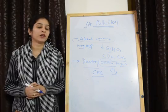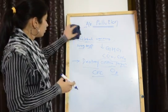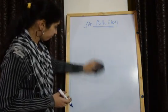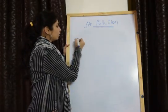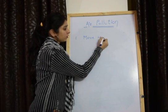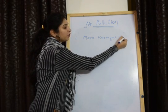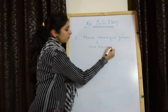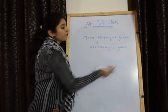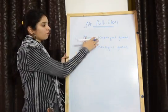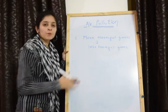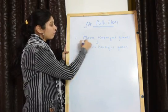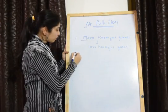Now, what are the prevention or control methods we can use to control air pollution? First, more harmful gases should be changed into less harmful gases. Some physical and chemical methods should be used to convert more harmful gases into less harmful gases. Absorption method, adsorption method, and scrubber method are used to control and convert more harmful gases into less harmful gases.